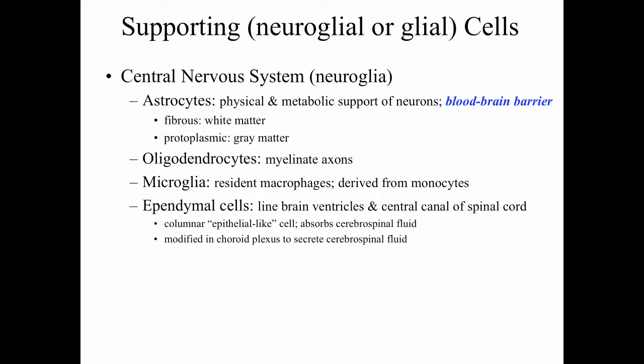What I'd like to do now is talk about some of the supporting cells or neural glial cells in the nervous system. We can talk about the central nervous system neural glial cells as astrocytes, oligodendrocytes, microglial cells, and ependymal cells.